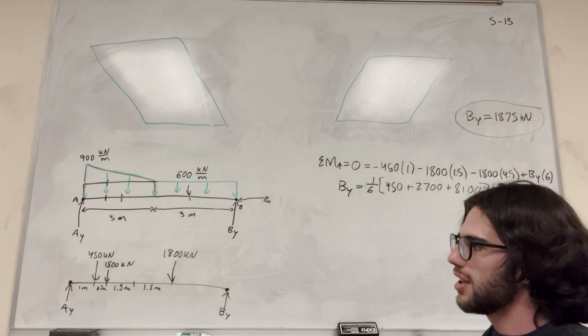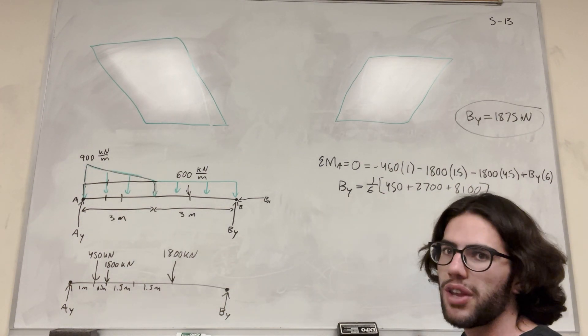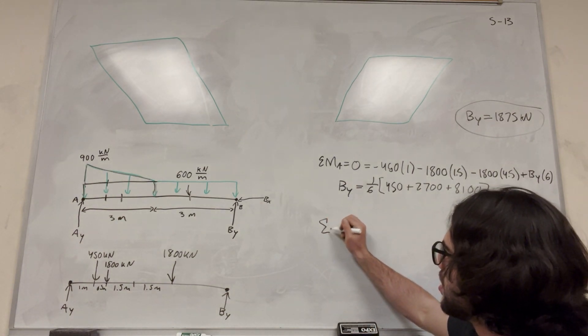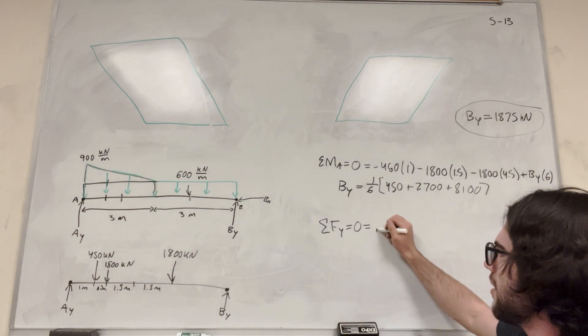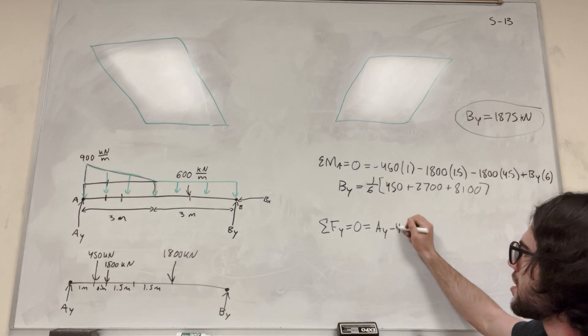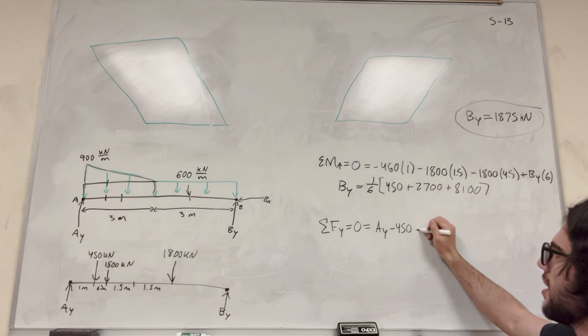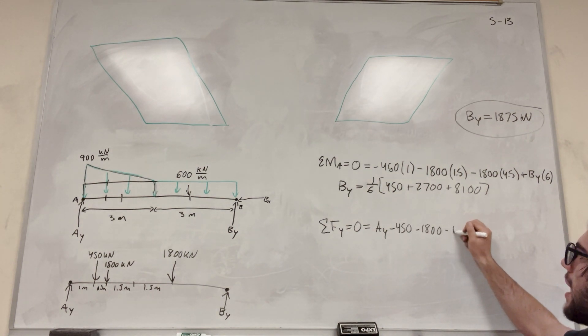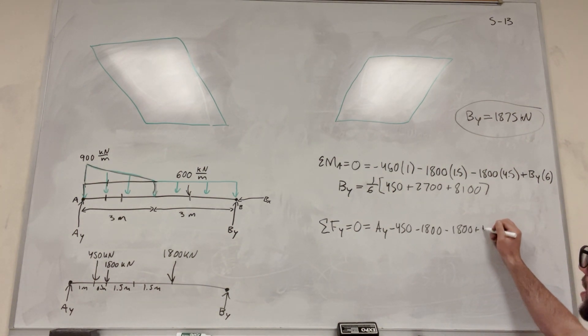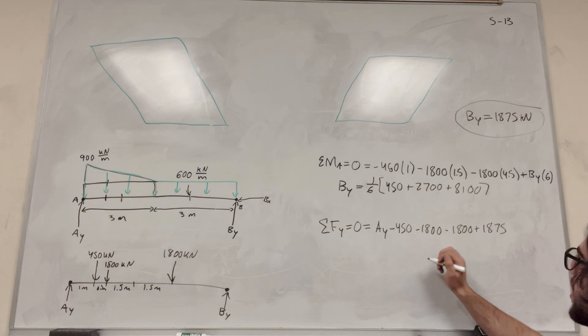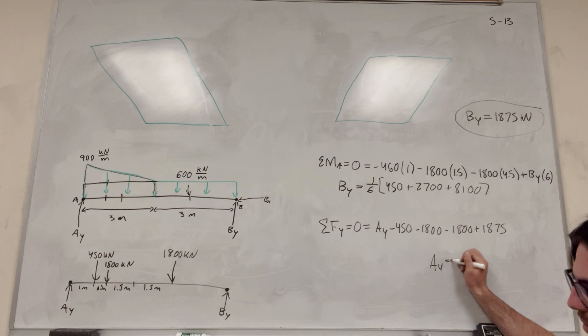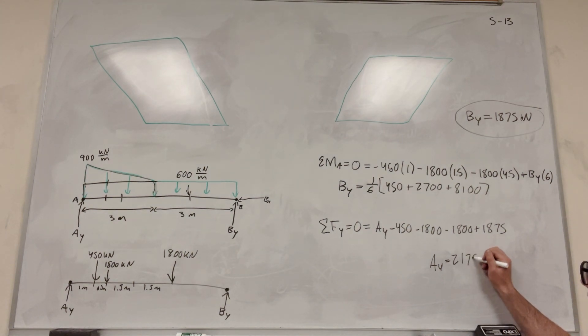Now that we have only one unknown left, we can do sum of the forces in the Y. So sum of forces in Y equals zero. So it's going to be equal to A_y minus this 450, just going left to right, minus 1,800 minus 1,800 plus B_y. And we know B_y is that number, so we'll just plug in plus 1,875, and then move A to the other side, and you get that A_y is equal to 2,175 kilonewtons. And there you go.